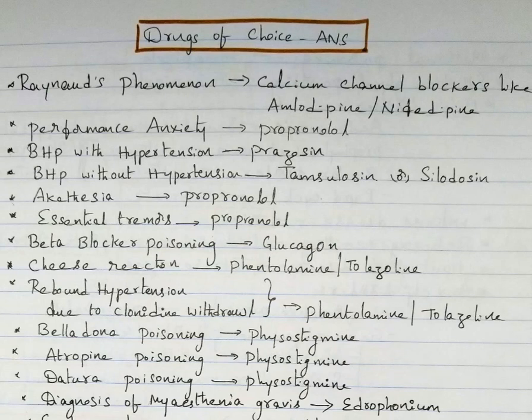Raynaud's phenomena: drug of choice is calcium channel blockers like amlodipine or nifedipine. Performance anxiety: it is propranolol. BHP (benign hyperplasia of prostate) with hypertension: it is prazosin. BHP without hypertension: it is tamsulosin or silodosin.